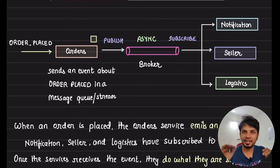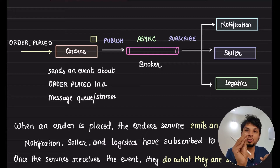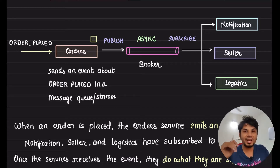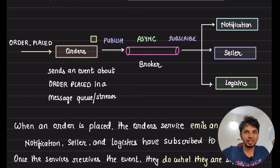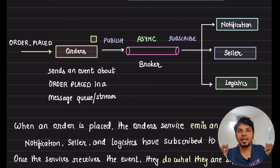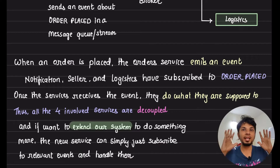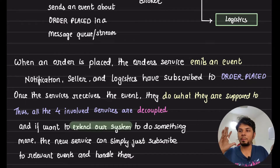When the event — say, 'order placed' — is published, the notification service, seller service, and logistic service, which have subscribed to it, each take their own action based on the event. They are not told what to do; each service independently decides. For example, the notification service knows it needs to send a notification to the user. Each involved service has its own separate brain. The order service, once the order is accepted, simply publishes the message and is done. This is the core idea behind event-driven architecture.